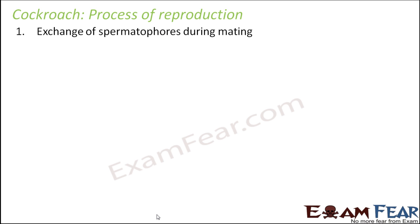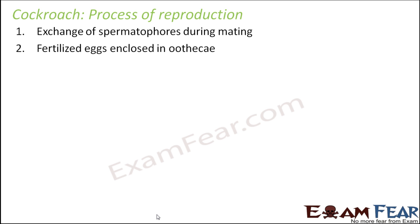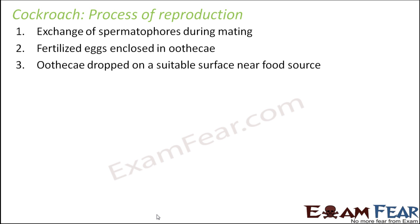During mating, spermatophores are transferred from the male cockroach to the female cockroach. Once the sperms enter the female cockroach, fertilization takes place and the fertilized eggs are located inside the ootheca. This ootheca, which contains the fertilized eggs, is then dropped out of the female cockroach's body and deposited on a suitable surface near a food source, where it will gradually develop into a new organism.